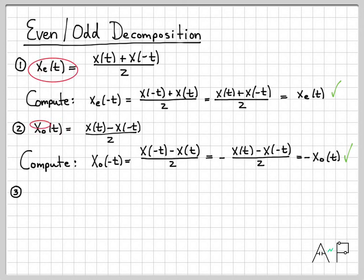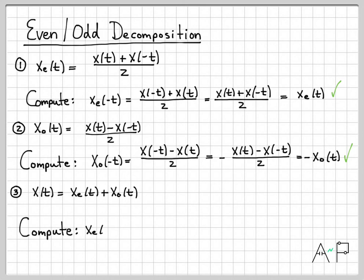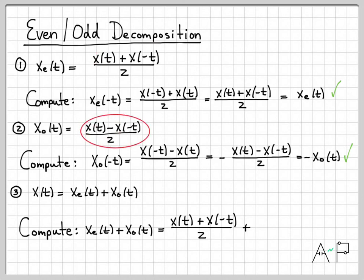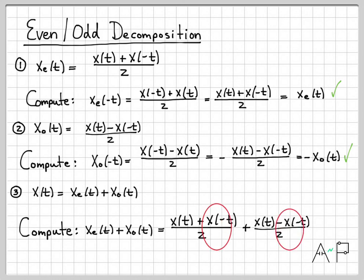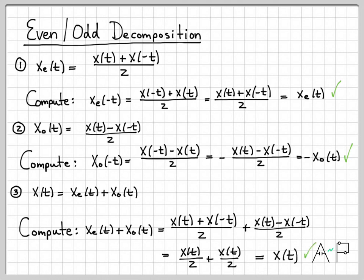Finally, we need to show that the even component plus the odd component adds up to the original signal x(t). Adding x_e(t) plus x_o(t) using their equations, we see that one-half of the time-reversed x cancels with negative one-half of the time-reversed x. We're left with x(t)/2 plus x(t)/2, which is x(t). So the even part is indeed even, the odd part is indeed odd, and their sum equals the original signal. We can use these equations to decompose any signal into even and odd components.